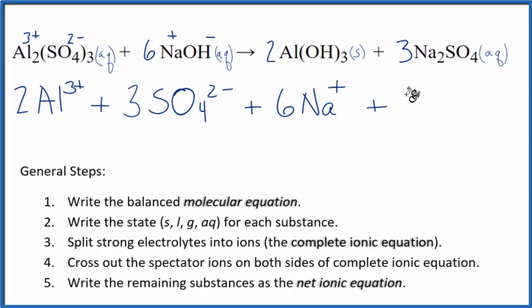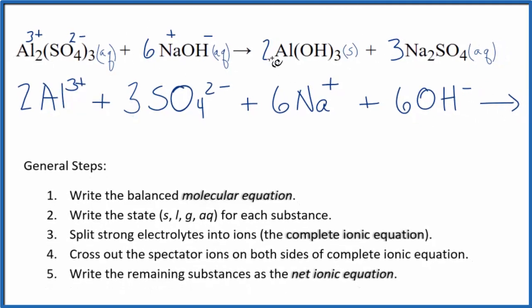For the products, this aluminum hydroxide Al(OH)3 has an s after it, it's a solid. In net ionic equations we don't split up solids, so we're just going to put 2 aluminum hydroxide plus we have 2 times 3, so we have 6 of those, Na plus.